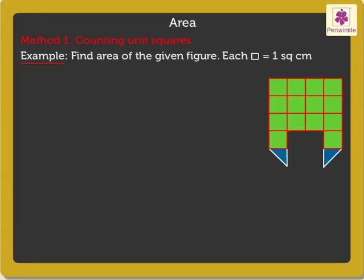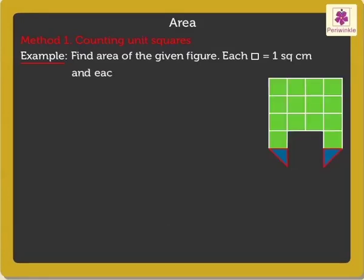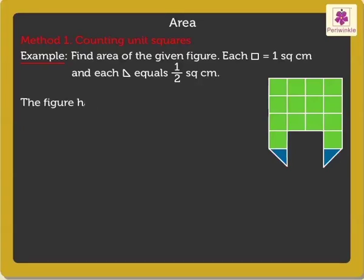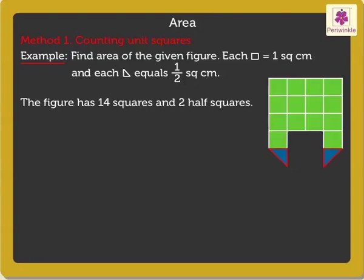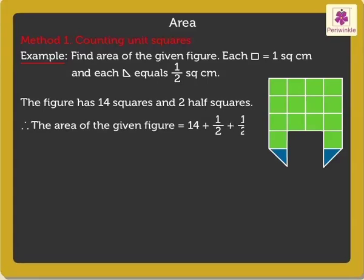Now let's find the area of the given figure. Each square equals one square centimeter and each half square equals half a square centimeter. On counting, we get that the given figure has fourteen squares and two half squares. Therefore the area of this given figure is equal to fourteen plus half plus half, which is fifteen square centimeters.